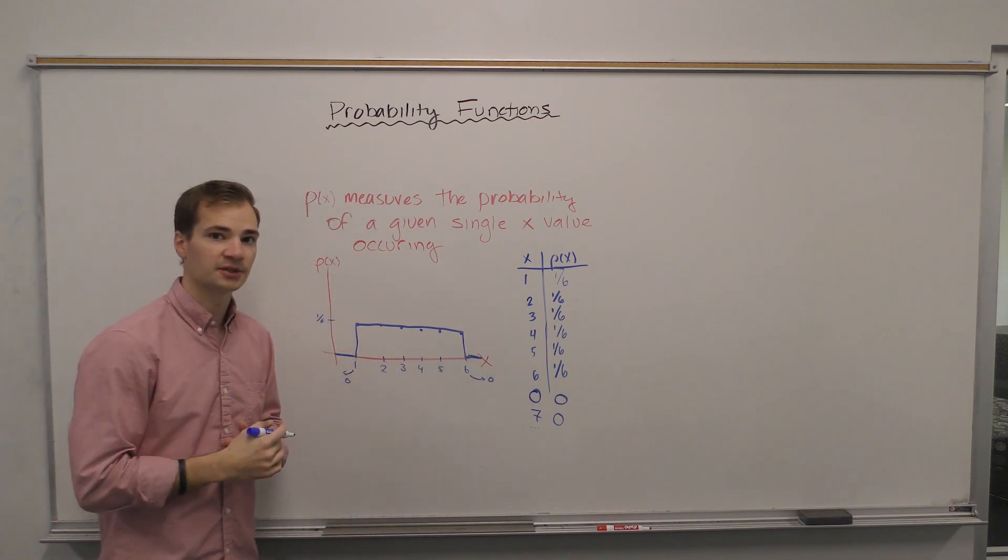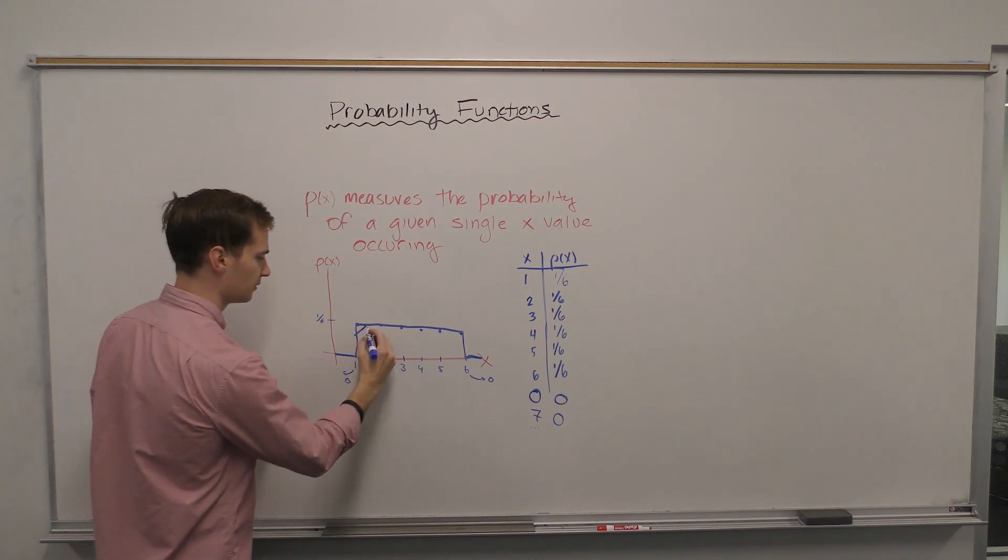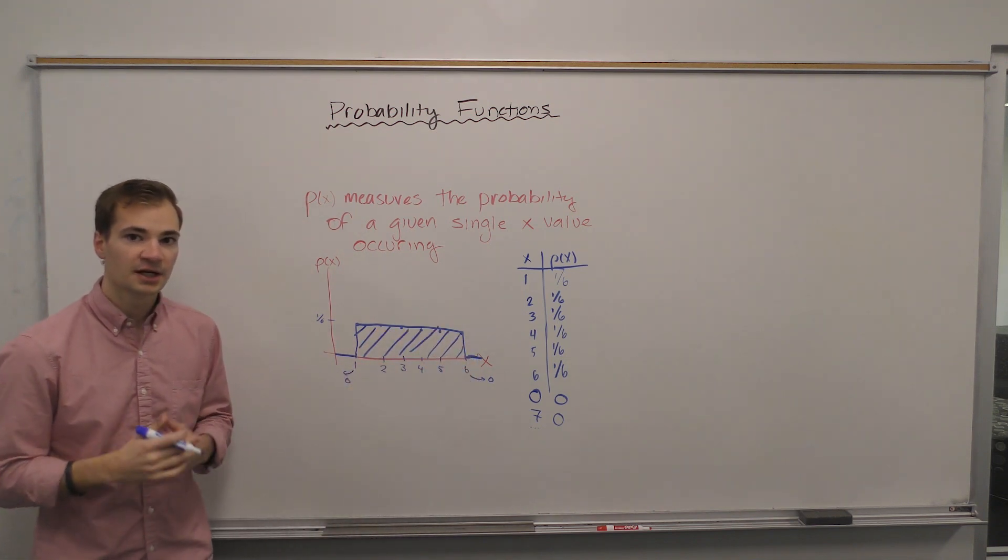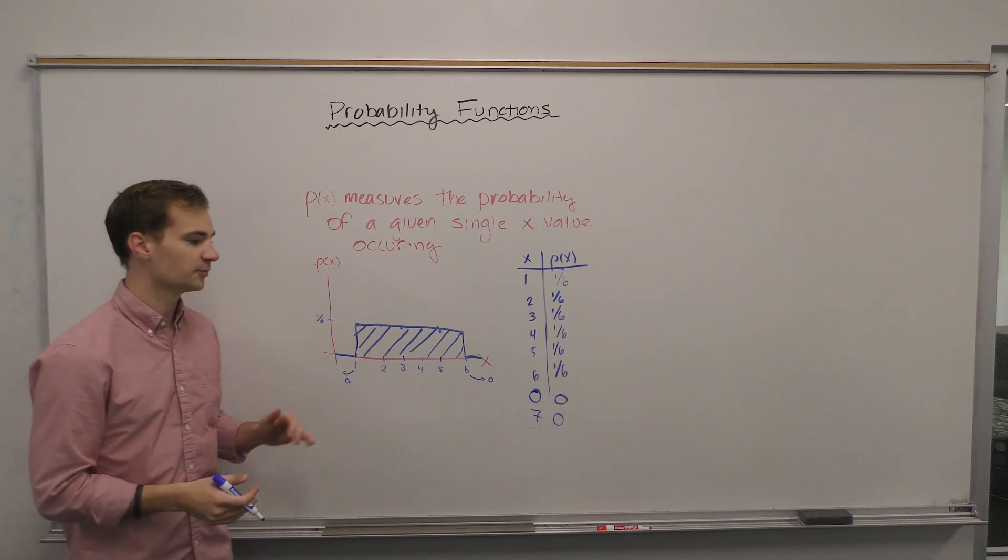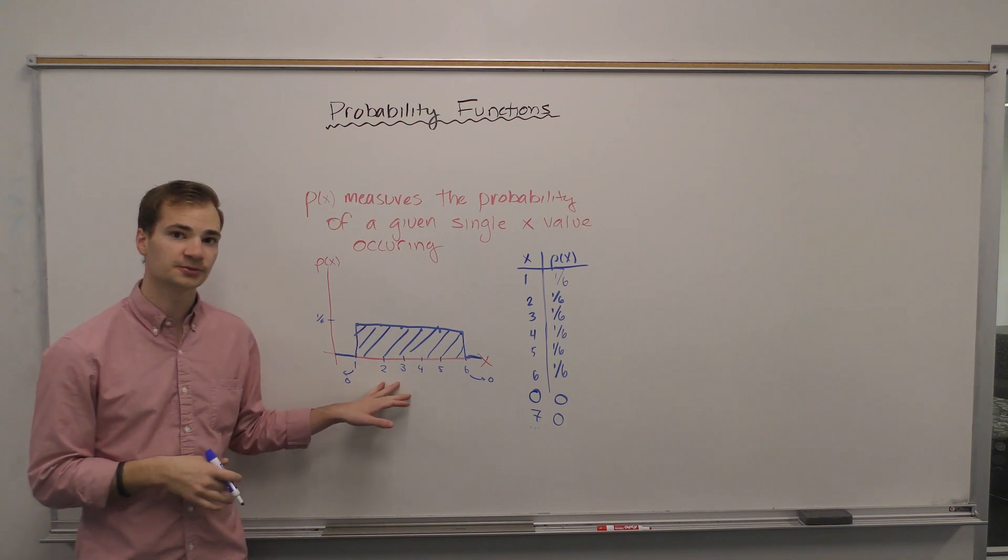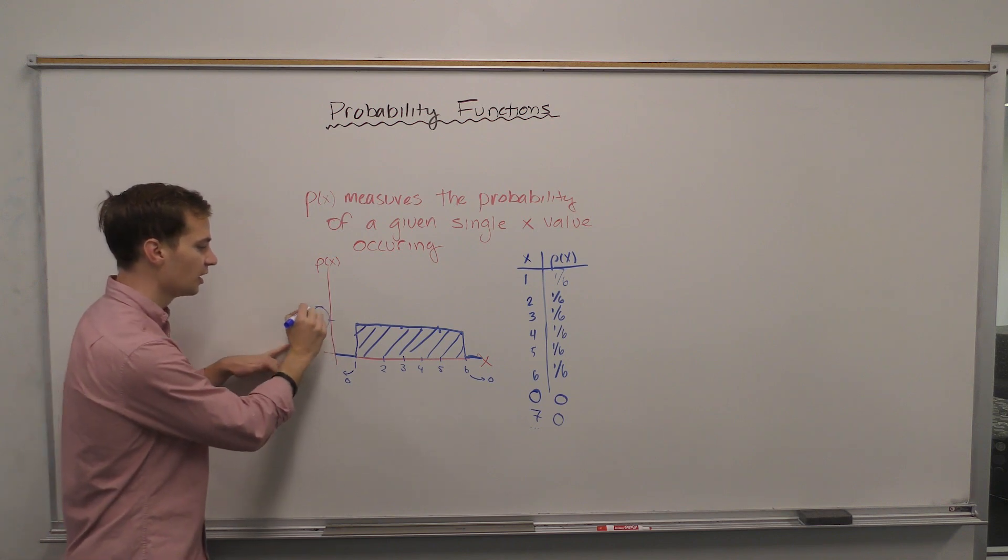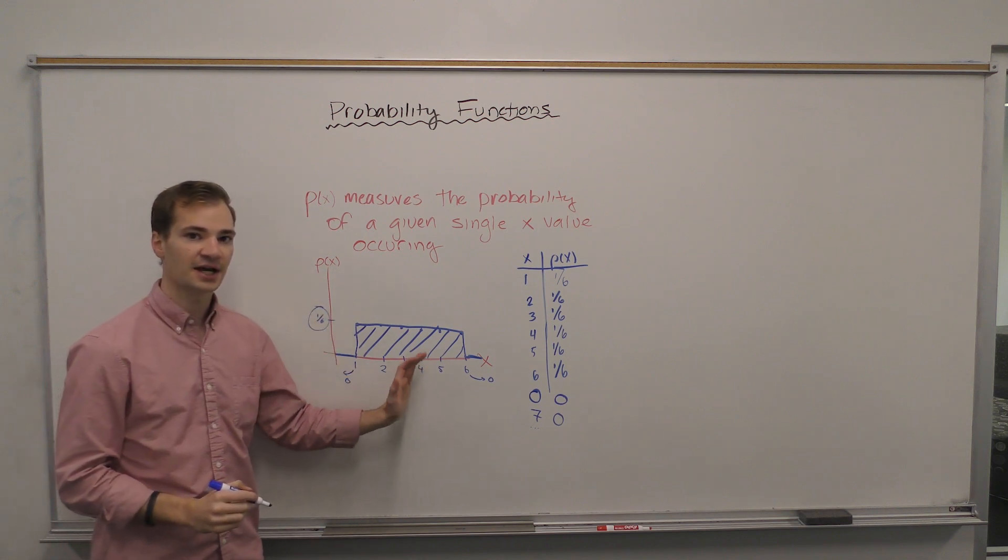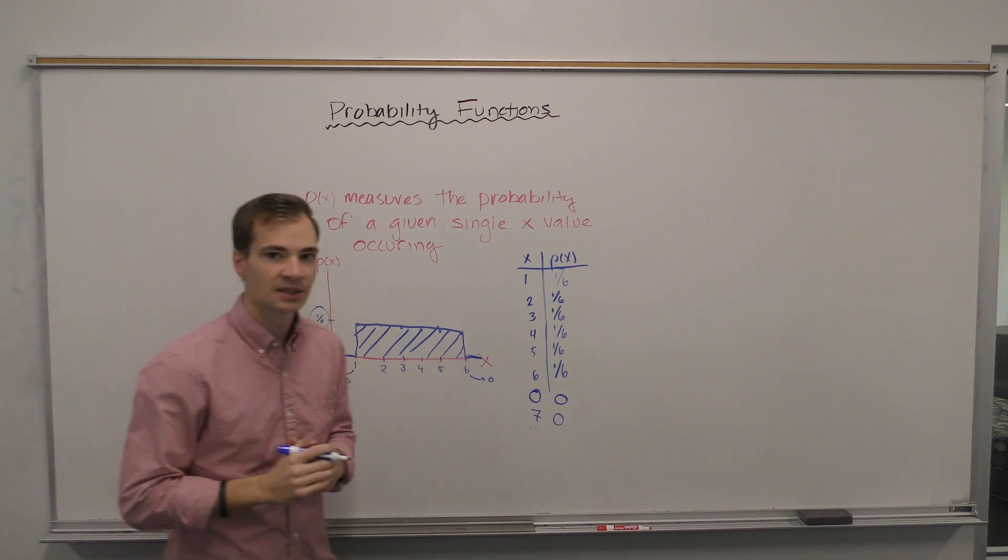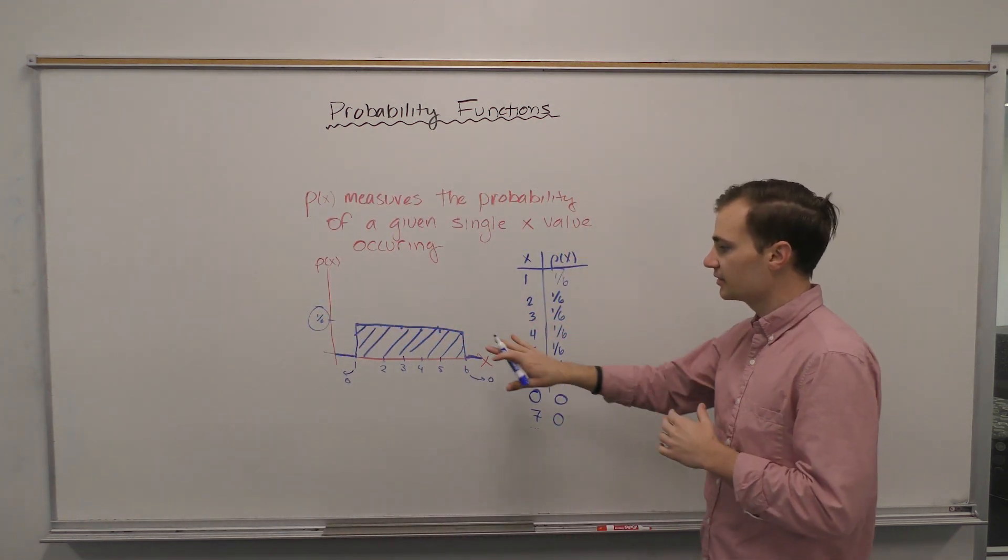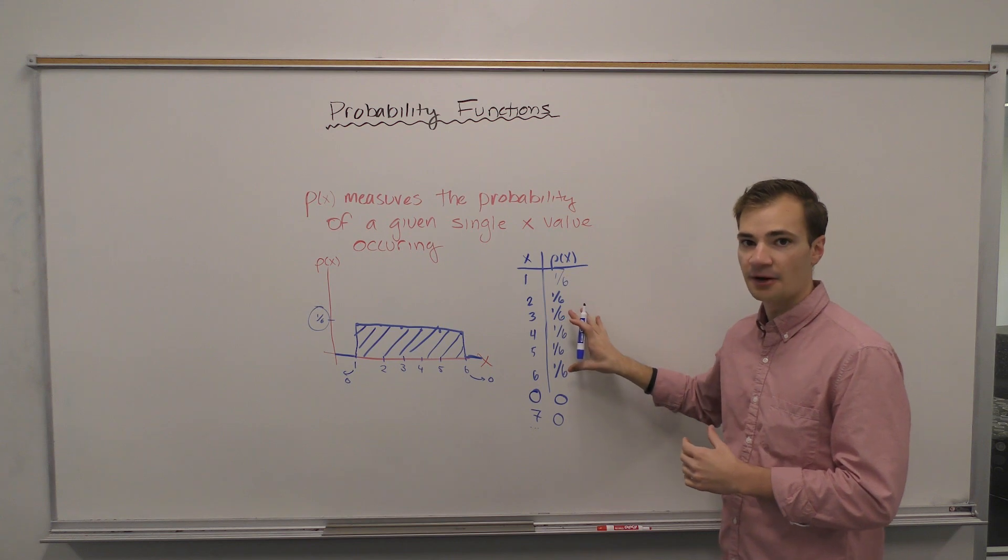The area of the probability density function then is under this rectangle. Now if you've already taken some of the course, you might recognize this is the uniform distribution. All that means is that we have a uniform probability, one-sixth of each of the x's occurring for our domain.